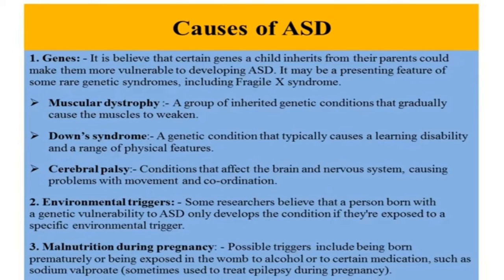Now we will see the causes of ASD. Research shows there is no single cause of this disorder. However, available data suggest that this disorder results from different sets of causal factors such as genetic and environmental. Genetic problems seem to play a significant role in ASD. This can happen in two ways: something happens during fetal development that alters genes, or the child inherits problematic genes from both parents. That is why a child is more likely to have ASD if a parent is also affected with ASD.